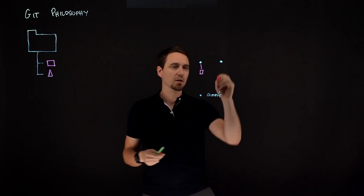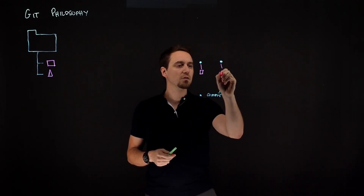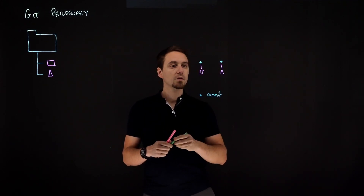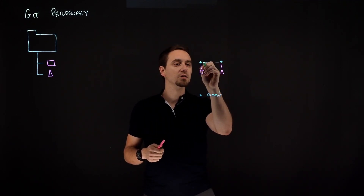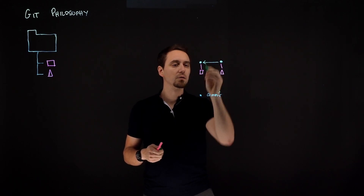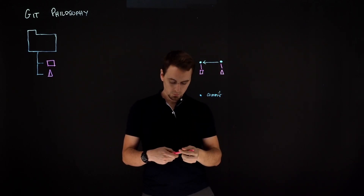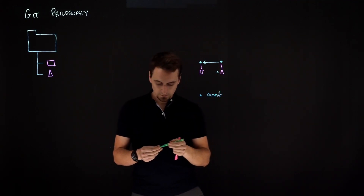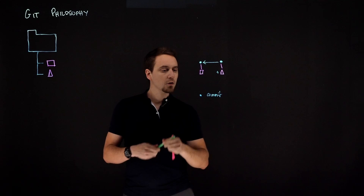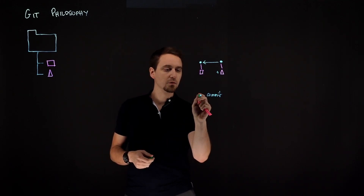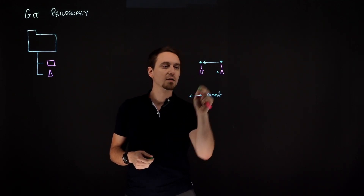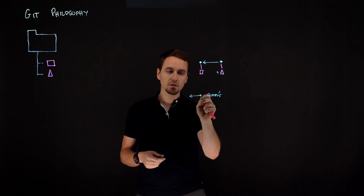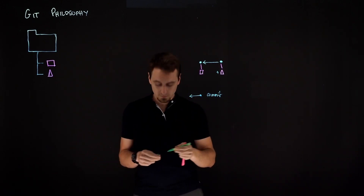Git is quite smart in that way — it's only going to store the difference. This second commit is actually the addition of a triangle compared to what we had before, so it says plus triangle. That's the diff it needs to remember. A commit, except for the very first one, is both a difference and a reference to what it's different from.